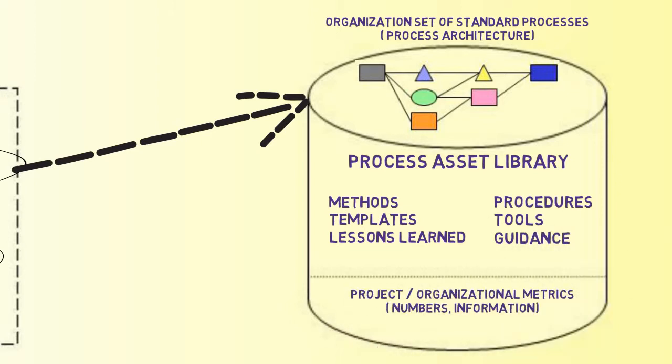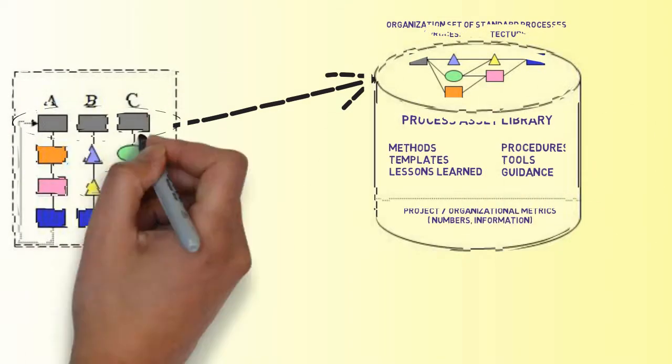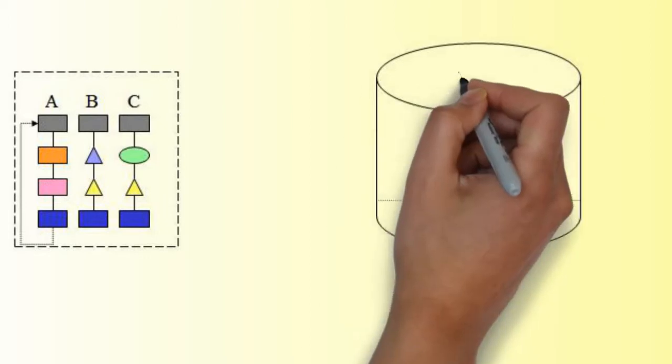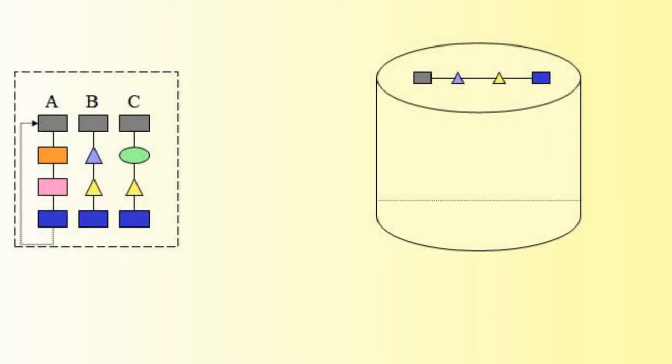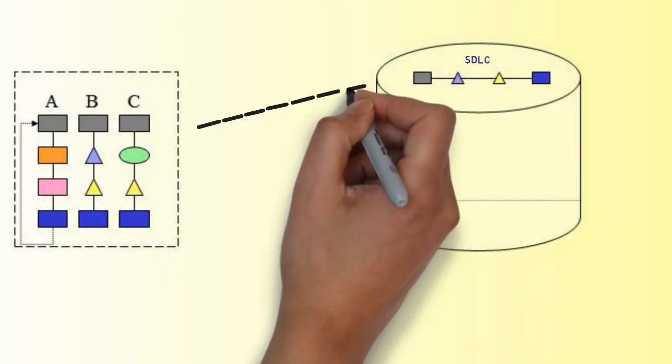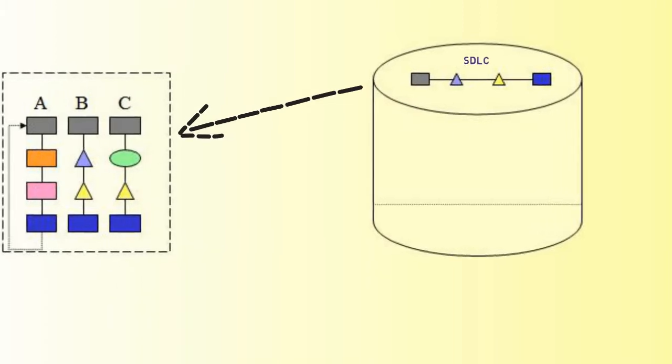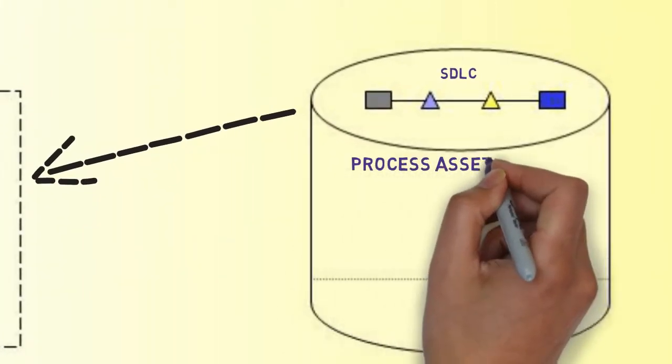The top-down approach usually starts with a standard lifecycle process and documentation that everyone follows, and as projects incur challenges, those assets are revised for specific purposes. As a collection of exceptions grows, the standard process becomes a process architecture, with the same kinds of alternatives available in the bottom-up implementation and approach.